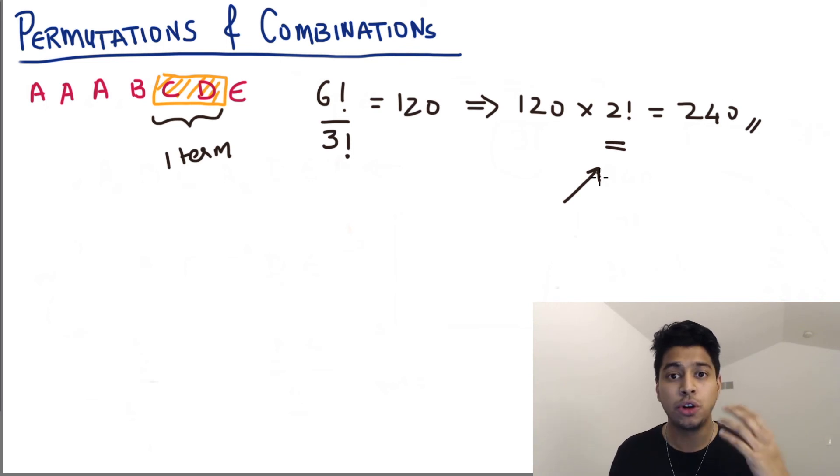Alright, so this is part three on the lecture on permutations and combinations. Now, you may be wondering, where are all the formulas? Where is NPR? Where is NCR? Where is N factorial? Things like that. They'll all come, all in good time. This is the best way to understand permutations and combinations. I learned it this way, and it's really an effective way to really understand it, so that you never forget it, and you don't have to memorize any formulas.